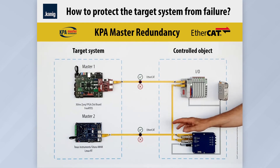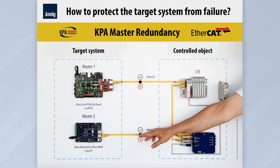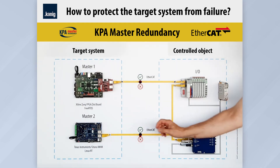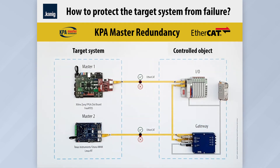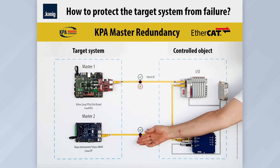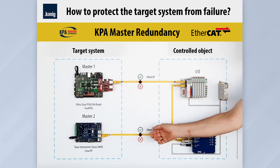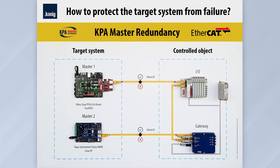Using the bottom switch, we simulate an operating failure of the currently active master, causing the upper master to take control again and become the leader. When the switch is turned back on, the lower device is connected to the network and goes into passive mode.